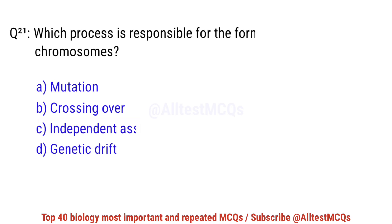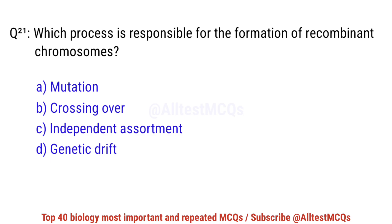Question number 21. Which process is responsible for the formation of recombinant chromosomes? The correct option is B: Crossing Over.